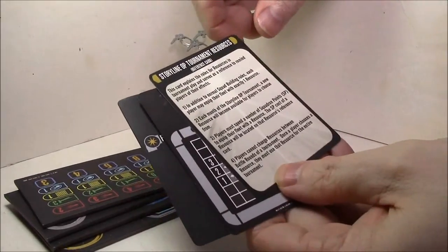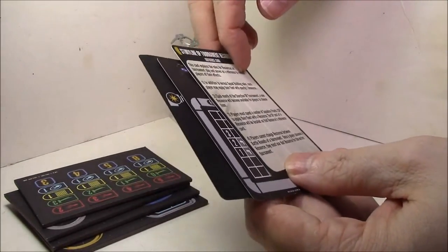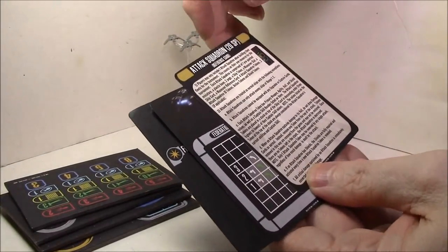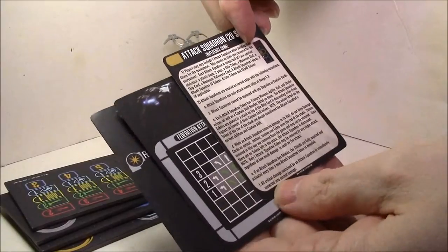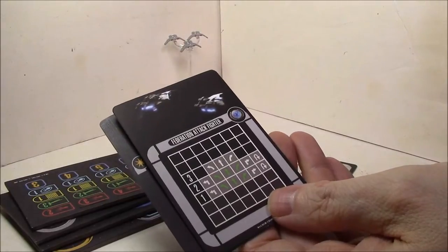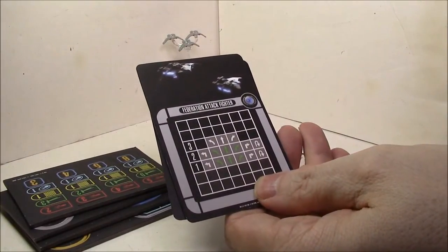It's a resource for 20 points and it has the same rules: weapon range one to two and so on and so forth. And yeah, so here is the Federation Attack Fighters movement chart.